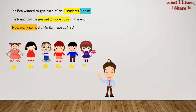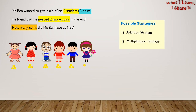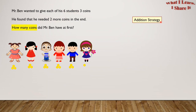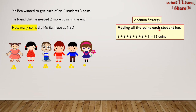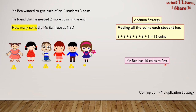Possible strategies. Number one, addition strategy. Number two, multiplication strategy. Addition strategy. So whatever Mr. Ben had, he gave it to all his students. If we add all these coins together, we will get how many coins Mr. Ben had at first, and that's what we have to find. Adding all the coins each student has: three plus three plus three plus three plus three plus three plus one equals 16 coins. Mr. Ben has 16 coins at first. Yay! We solved the problem with the addition strategy.